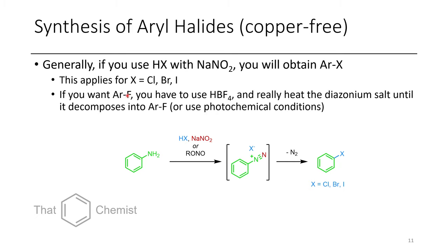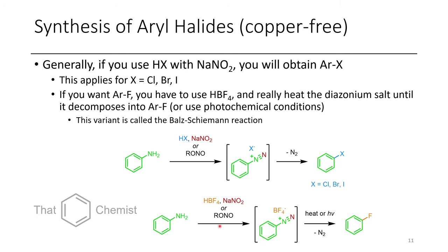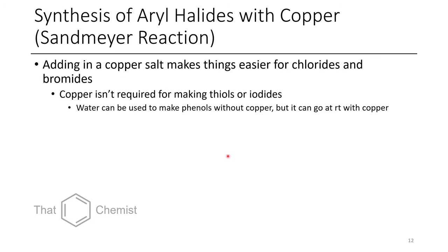If you wanted to make the aryl fluoride, you have to just make the BF4- salt and pyrolyze it, or treat it with photochemical conditions to afford the fluorides. Now if we're doing that reaction and we're making an aryl fluoride, it's called the Balz-Schiemann reaction. And some of these variants have their own specific names. So here, this is the Balz-Schiemann reaction.